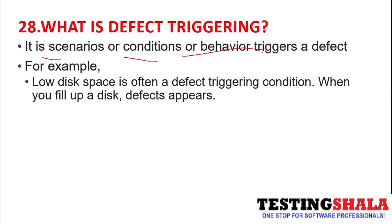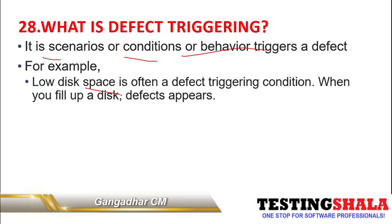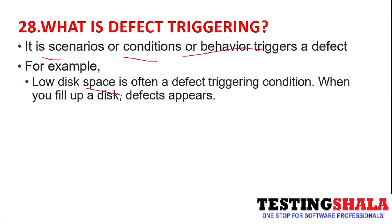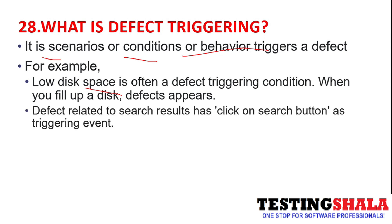For example, low disk space — when there is no space in the disk for further accommodation of data and we try to add more files, it will trigger a condition where it says your disk is full. The second example is defects related to search results: when we enter a particular keyword and click the search button, a trigger event happens where it queries the database to fetch records and display them on the user interface. Here, clicking the search button is the defect trigger.